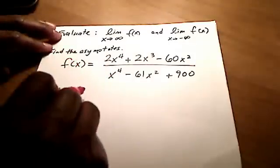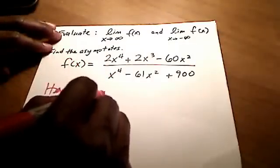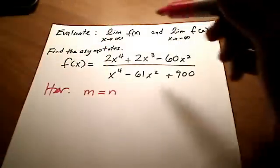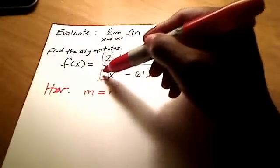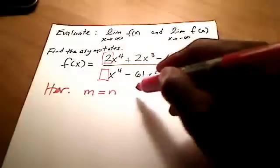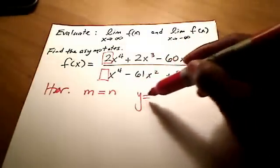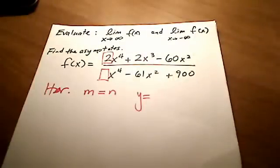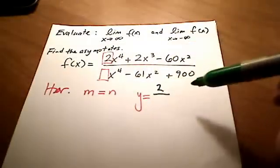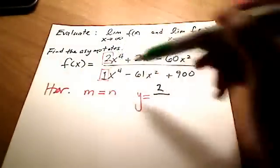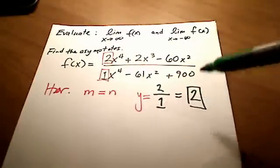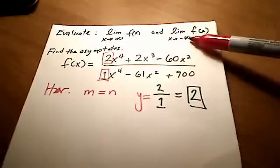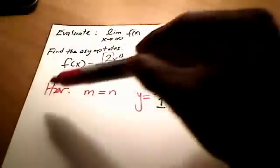Since the degree of the numerator is 4, the book says since m equals n — since the two degrees are the same for numerator and denominator — we look at the leading coefficients for both and set y equal to their ratio. The leading coefficient on top is 2, and since I don't see one on the bottom, it's automatically 1. So y equals 2 is the limit as x approaches infinity, and it's the same as x approaches negative infinity.